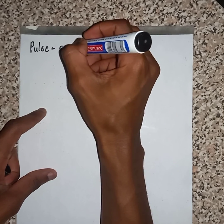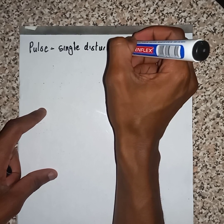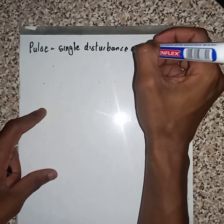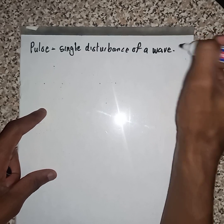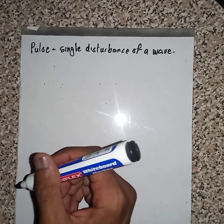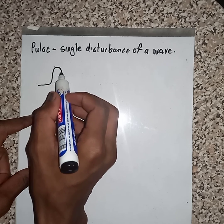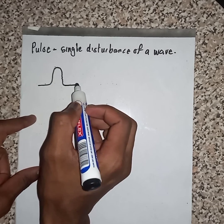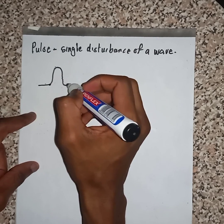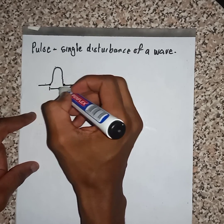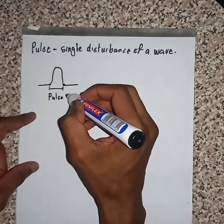A pulse is a single disturbance of a wave. If I were to draw a diagram, let's say we have a pulse — from this point up until this point, we call that the pulse length.